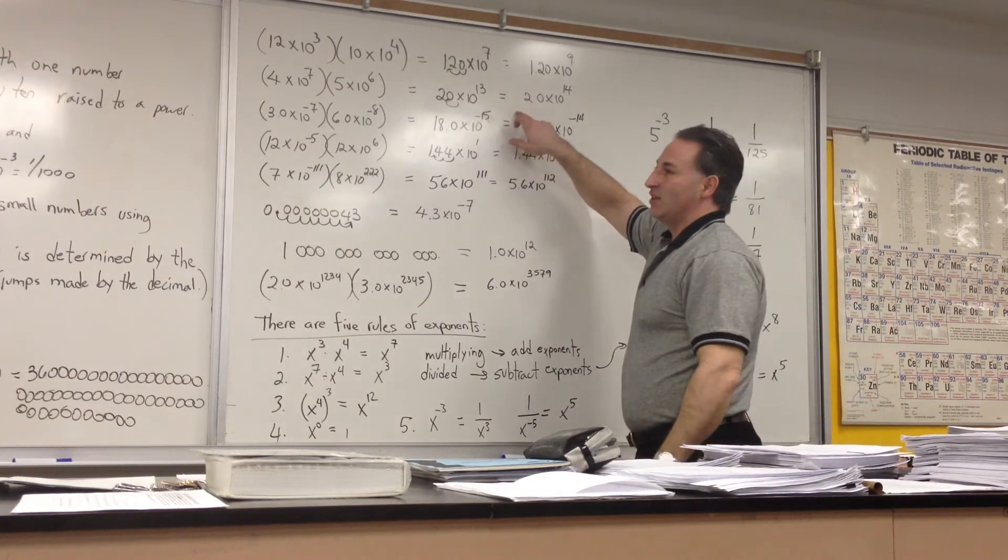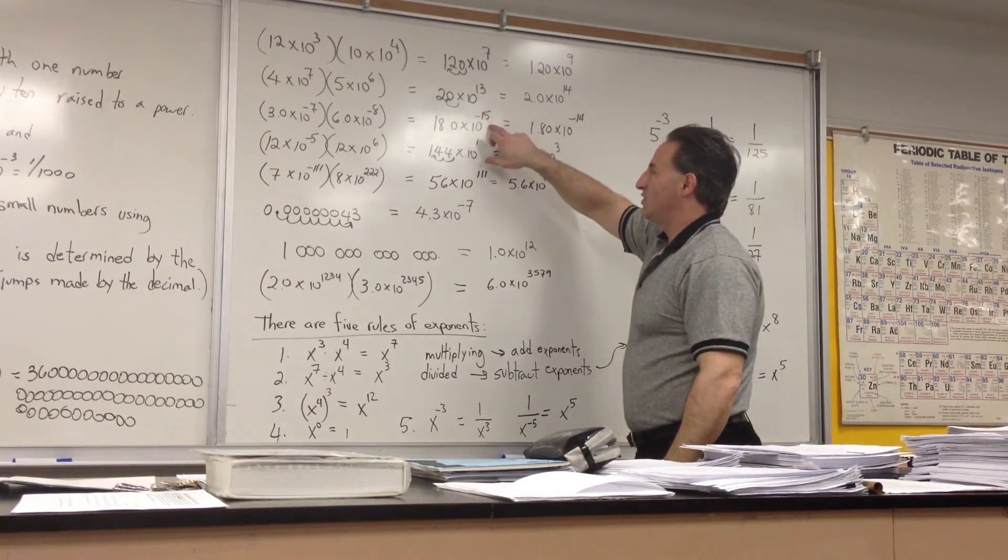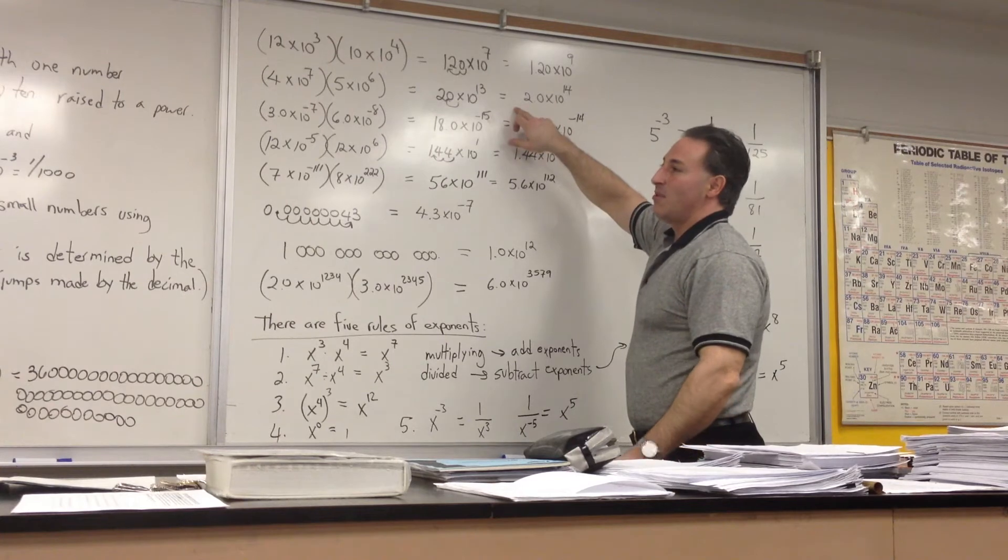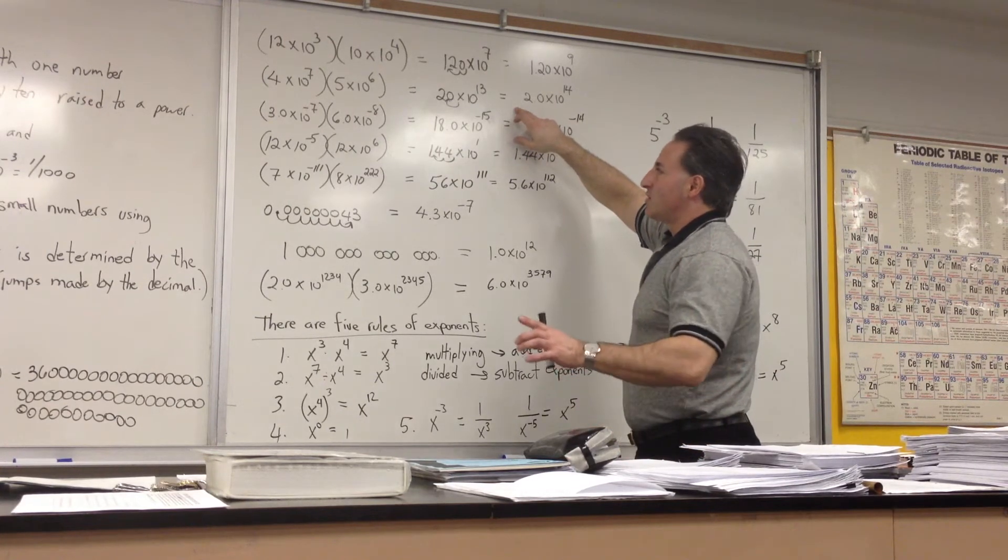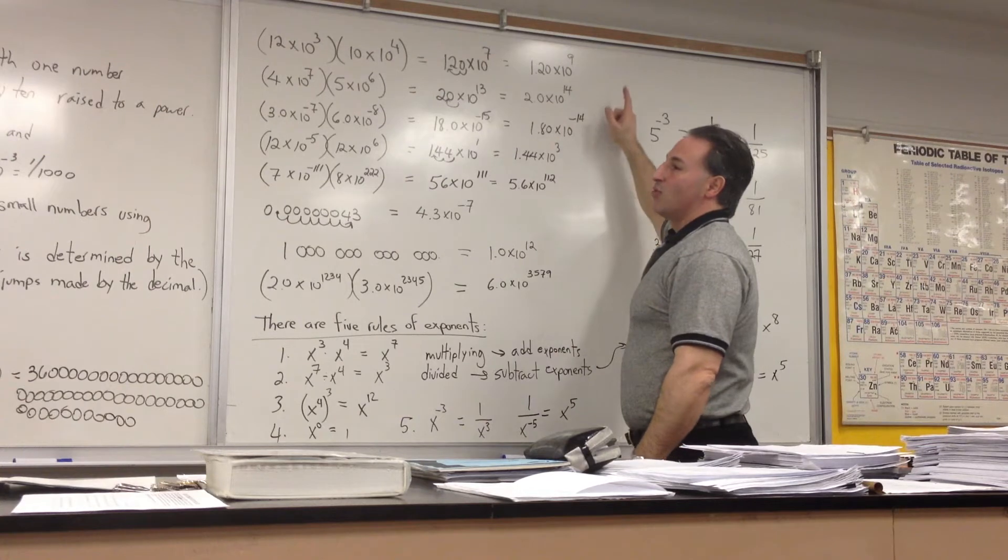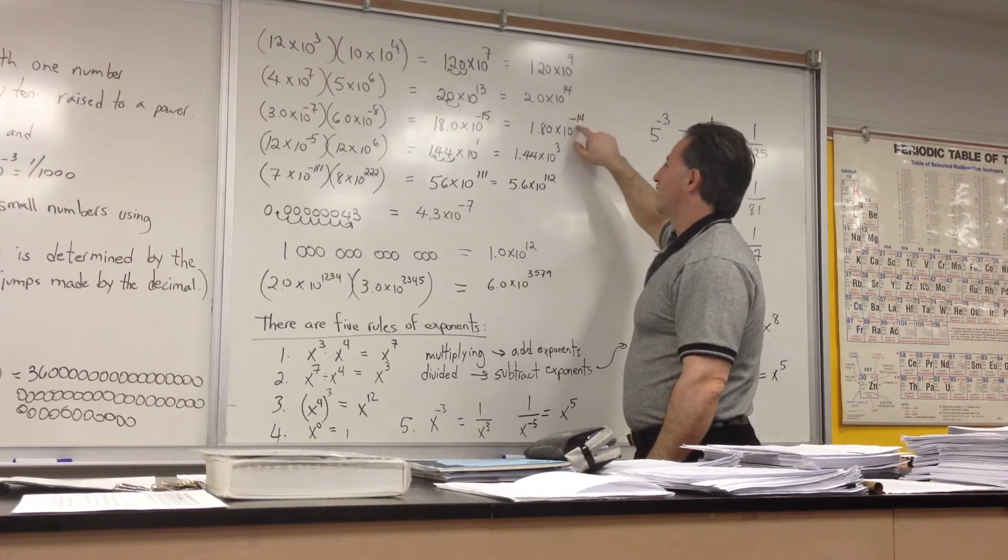Now you might be tempted to go from 10 to the minus 15 to 10 to the minus 16. But remember, when a decimal moves to the left, the exponent becomes more positive, so it goes up. 10 to the minus 14.